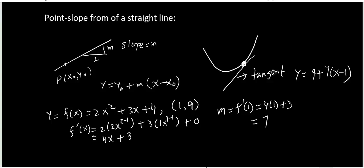This is in point slope form. You can do some simplification: you get 9 plus 7x minus 7, so that gives you 7x plus 2, and this equation is given in slope intercept form. And we are done with the equation of tangent line.